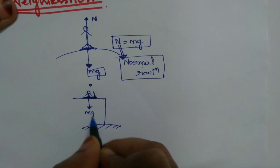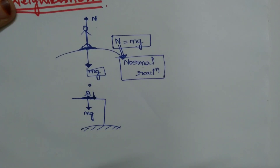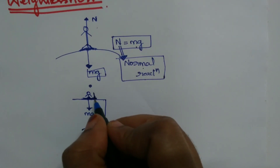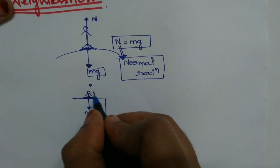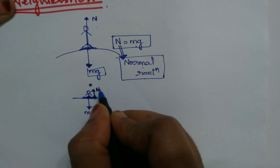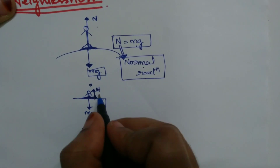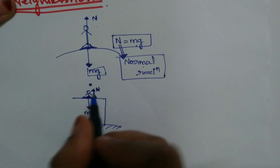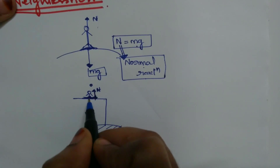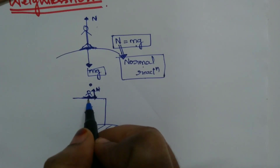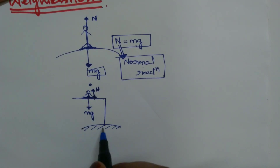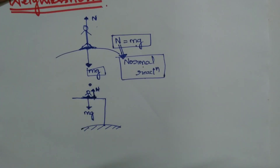You will have your mg — acceleration due to gravity is present. Since you are pressing the surface with a certain amount of force, the surface will apply the same amount of force back at you, and that is known as normal reaction. Due to normal reaction, you will feel your weight when you are standing on the platform connected to the earth.